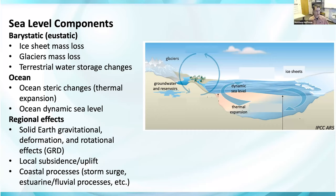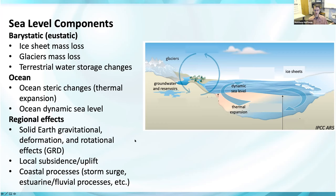There are mass change components, sometimes called barystatic or very static. There's ocean components, including steric change and dynamic sea level. And then there's regional effects, including solid earth effects due to gravitational deformation and rotation, which are sometimes called GRD, local subsidence or uplift processes, and then other coastal processes, such as storm surge and estuary effects.